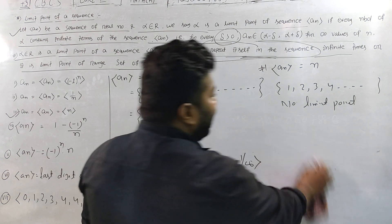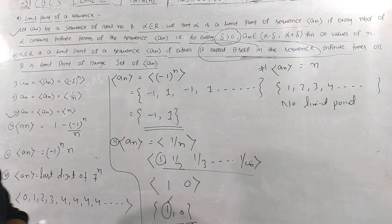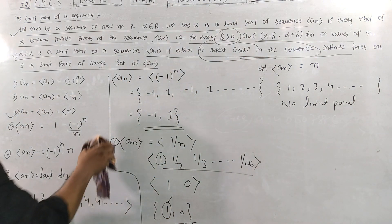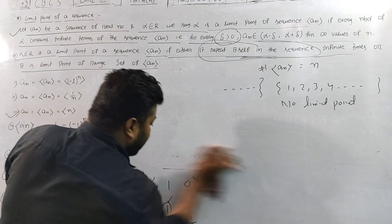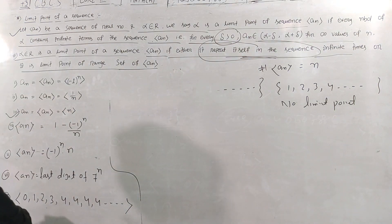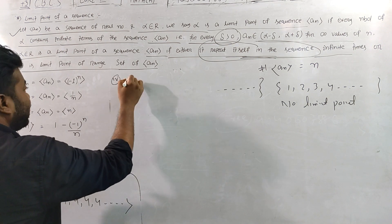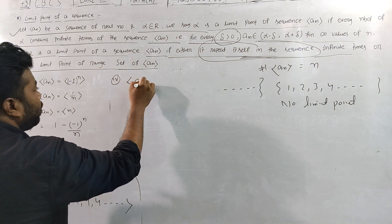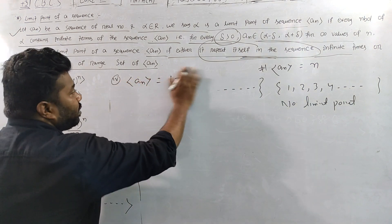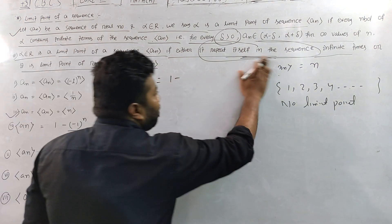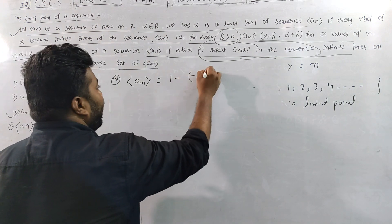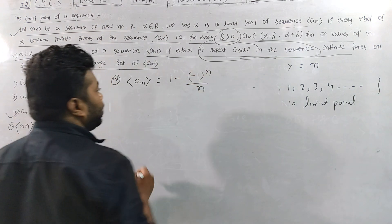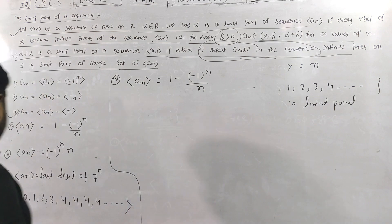The first question is complete. The next question: the fourth question is a_n = 1 minus ((-1)^n) / n. We have to find the limit point of this sequence.